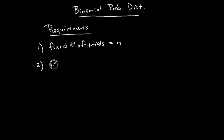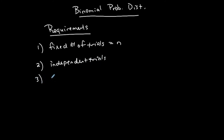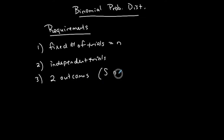The second requirement is independent trials — that means one trial is not affecting another. The third requirement is two outcomes: success or failure. Capital S is success, capital F is failure. Success doesn't necessarily represent a better outcome; it just represents the probability that you're trying to find.